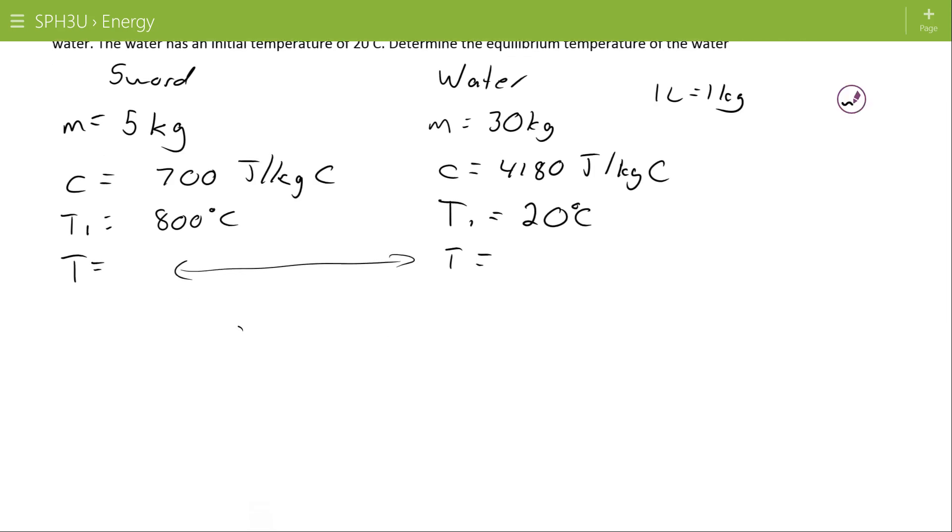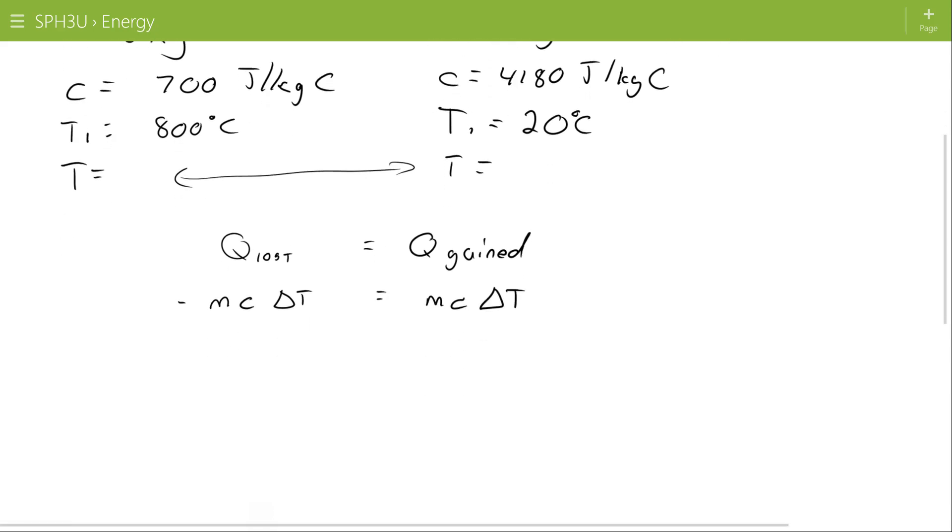The heat, the energy change, or the energy lost by the sword will be equal to the energy gained by the water. Since this is a loss, we say that it's negative m c delta t. And since this is a gain, we say that it's positive m c delta t. With that in hand, I can substitute.